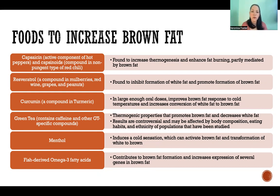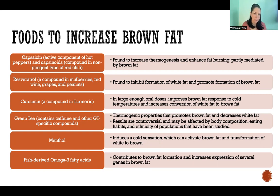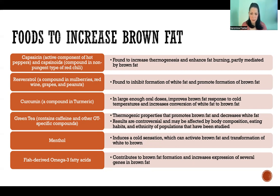The first compound is capsaicin, and also capsaicinoids. Capsaicin is the active component in hot peppers — it's what makes them spicy. Capsaicinoids are another class of compounds found in non-pungent types of red chilies. Taking capsaicin has been found to increase thermogenesis and enhance fat burning, and that's partly mediated by activation of brown fat.